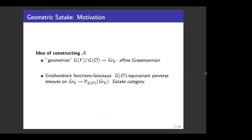The rough idea of constructing category A is as follows. First, we consider the single-sided quotient G(F)/G(O). We want to endow an algebro-geometric structure on it. The resulting geometric space, which we denote by Gr, is the affine Grassmannian. Motivated by the double coset structure in the definition of the spherical Hecke algebra, we hope to consider the G(O)-equivariant perverse sheaves on this Gr. This category is denoted by P(G(O)\Gr) and is sometimes called the Satake category.